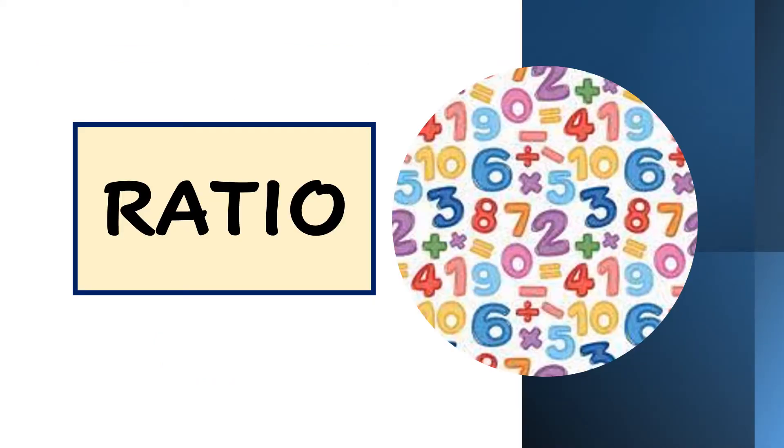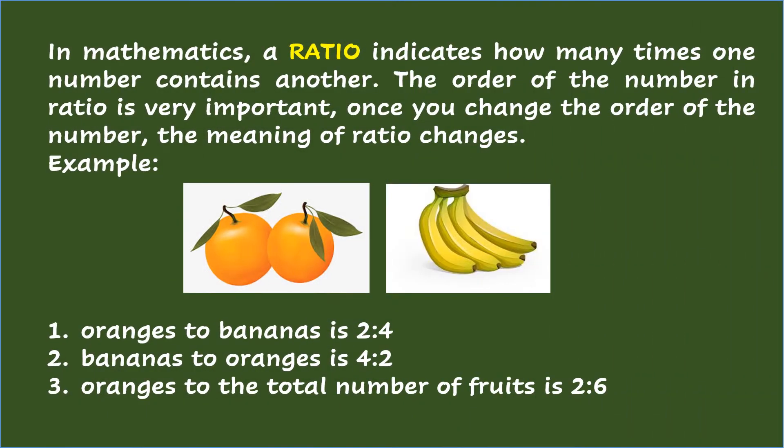Ratio. In mathematics, a ratio indicates how many times one number contains another. The order of the numbers in a ratio is very important. Once you change the order of the numbers, the meaning of the ratio changes. Let's say, for example,